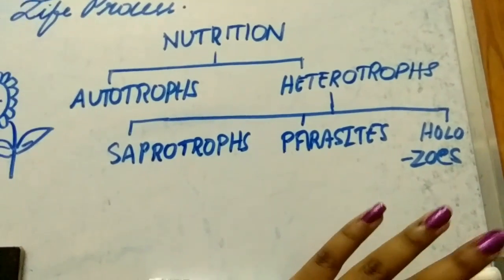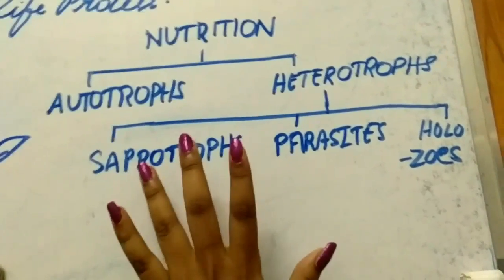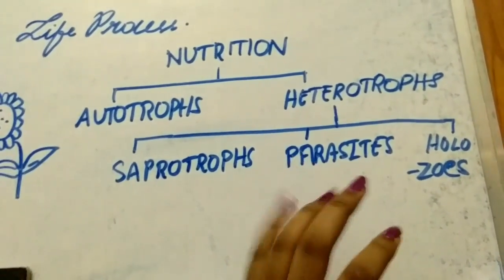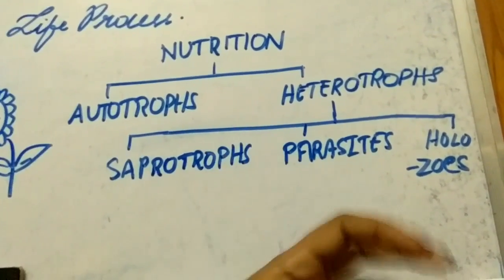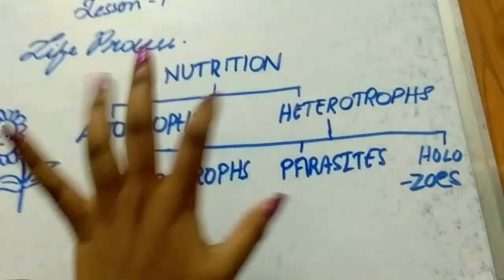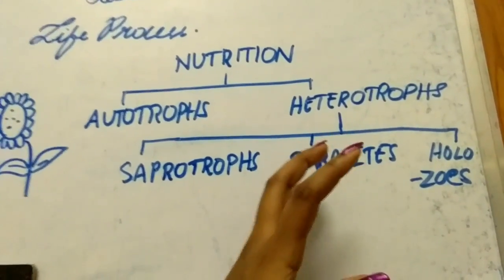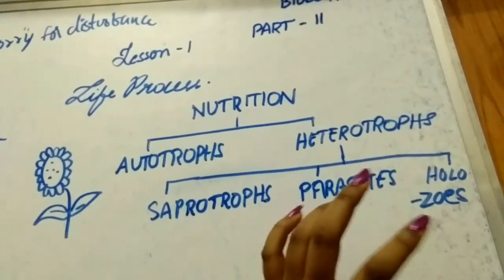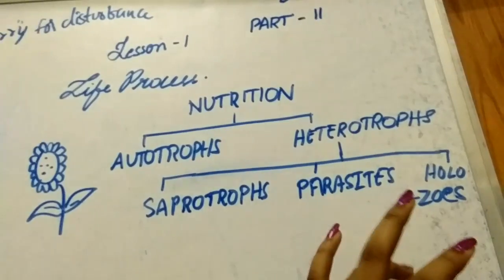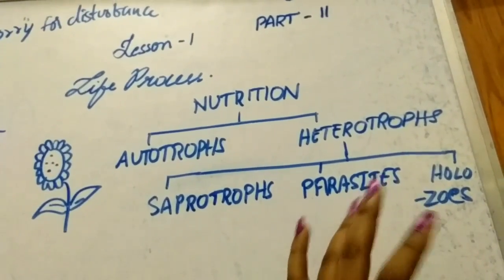Saprotrophic nutrition, also called saprophytic nutrition, is the nutrition in which an organism obtains its food from dead and decaying organic matter — dead and decayed plants, animals, and household waste like rotten bread, etc. The organisms having saprophytic nutrition are called saprophytes. Saprophytes are organisms which obtain their food from dead plants like rotten leaves, dead and decaying animal bodies, and other decaying organic matter like rotten bread.